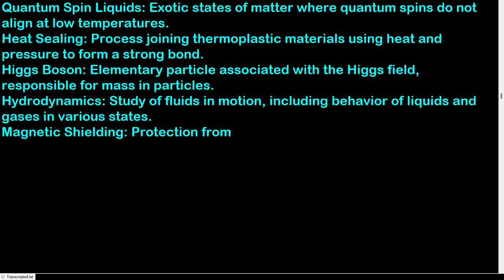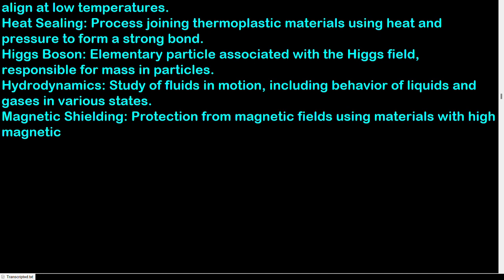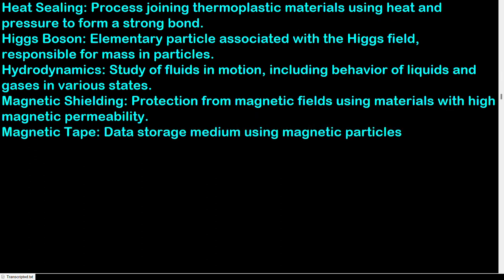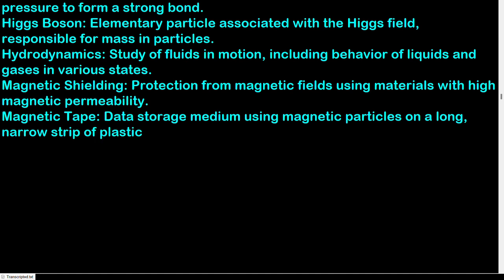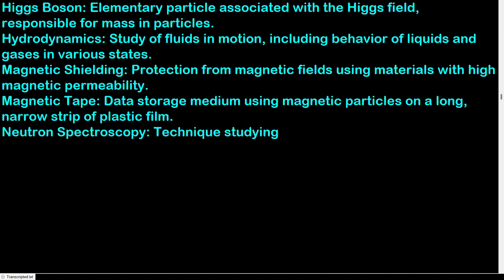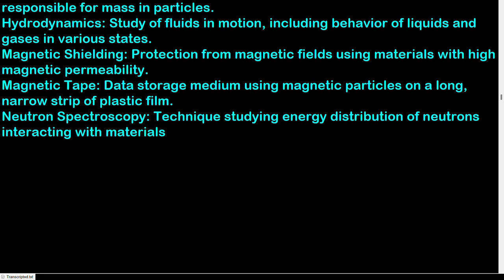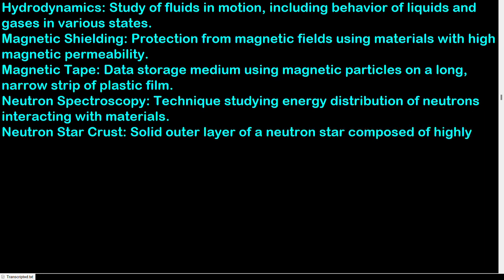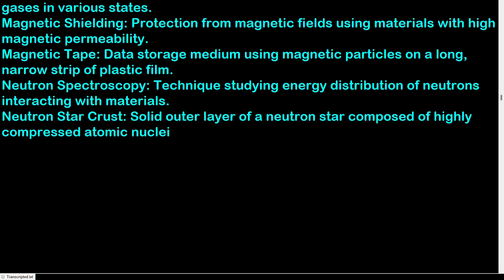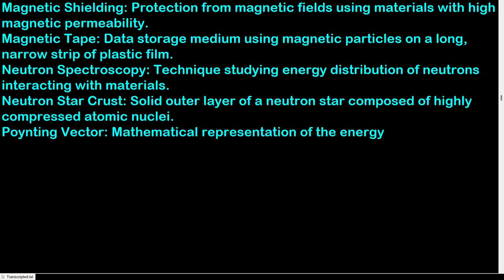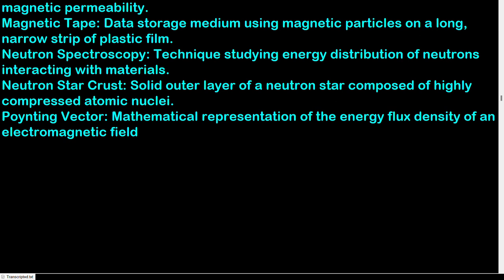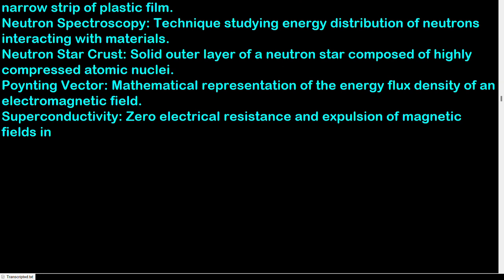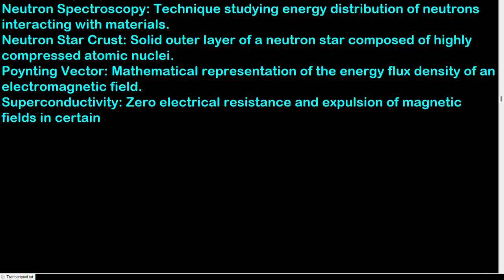Magnetic shielding: protection from magnetic fields using materials with high magnetic permeability. Magnetic tape: data storage medium using magnetic particles on a long, narrow strip of plastic film. Neutron spectroscopy: technique studying energy distribution of neutrons interacting with materials. Neutron star crust: solid outer layer of a neutron star composed of highly compressed atomic nuclei. Poynting vector: mathematical representation of the energy flux density of an electromagnetic field. Superconductivity: zero electrical resistance and expulsion of magnetic fields in certain materials. Superparamagnetism: magnetic behavior of nanoparticles consisting of single-domain magnetic moments.